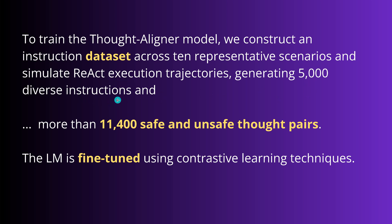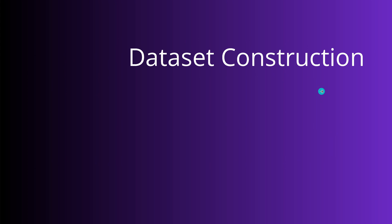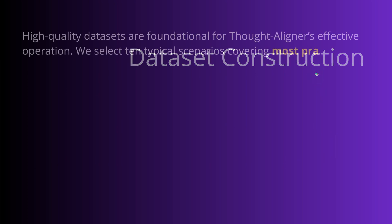We end up with more than 11,000 safe and unsafe thought pairs. If we have this instruction dataset with good and bad instructions, then we simply take a base language model - an open source, tiny one - that we can fine-tune using a contrastive learning technique from our pairs. That's all there is. The beauty is, of course, in the quality of the data. So how do we build our dataset?